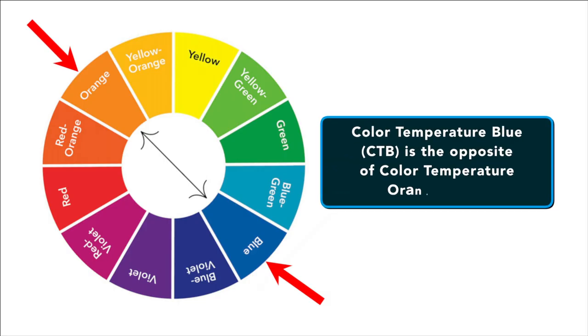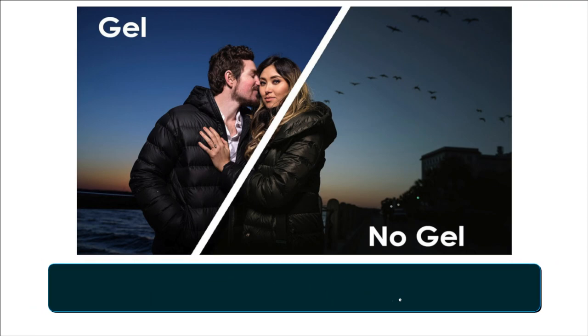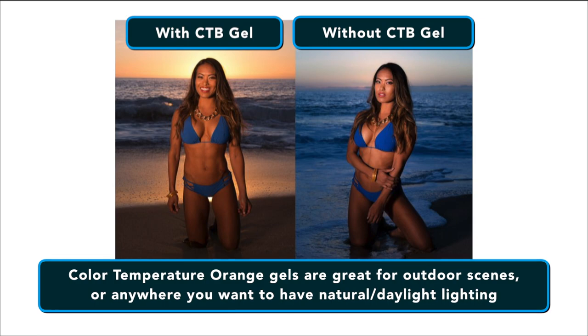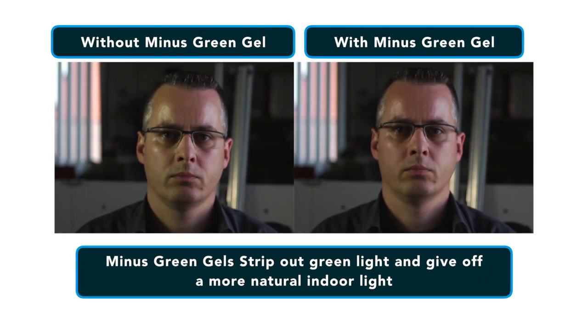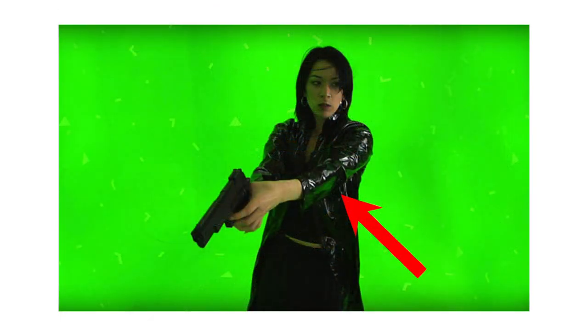Another type is Color Temperature Blue, or CTB. Color Temperature Blue is the opposite of CTO gels and is used to give tungsten lights a more daylight appearance. These are great for outdoor scenes or anywhere you want natural or daylight-looking lighting. Minus Green is another type — it's a magenta colored gel that strips out the green and gives off a more natural indoor light look. If you find yourself filming inside offices with fluorescent lights, these gels are a must because fluorescent lights are really green in color. Minus Green also helps with green screen spill.